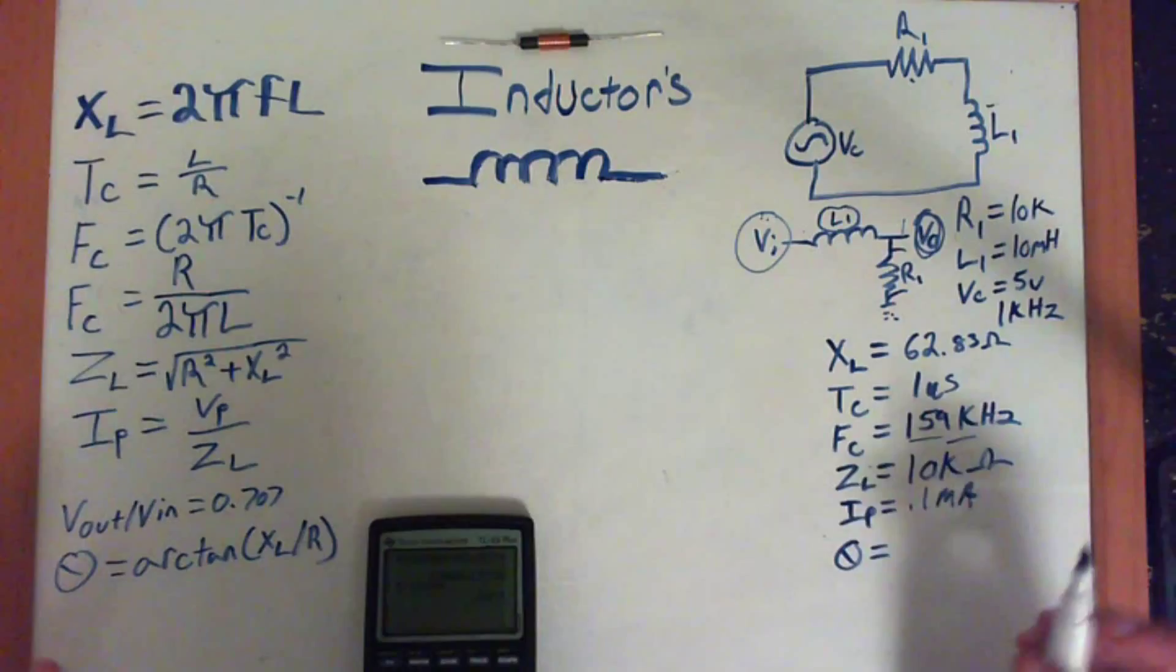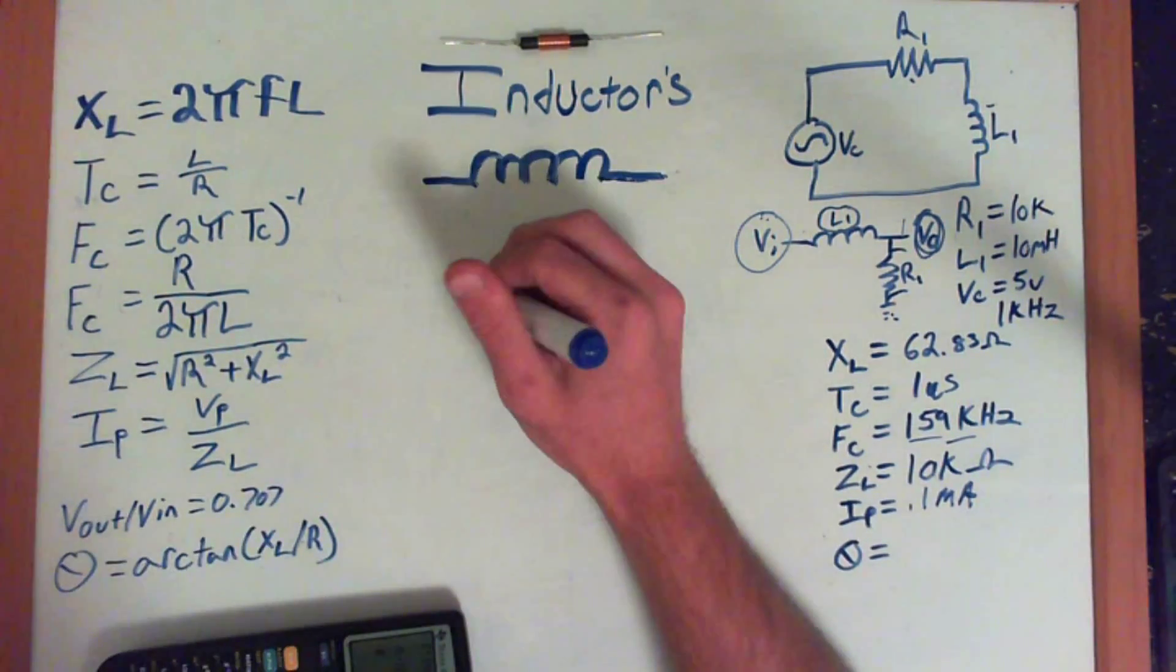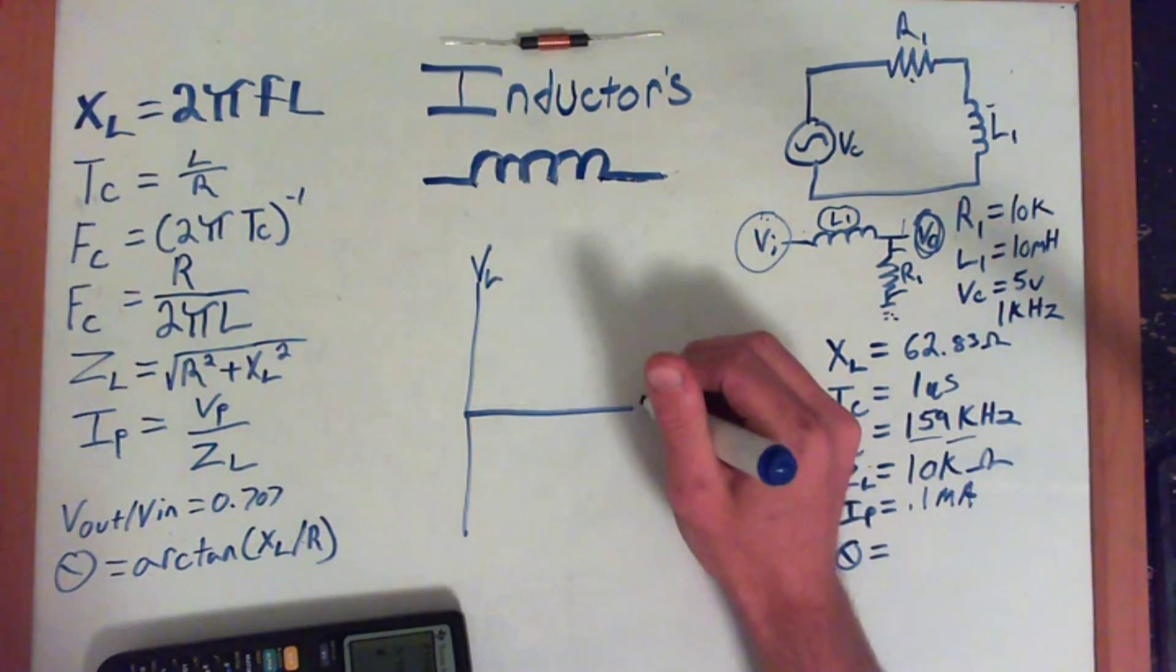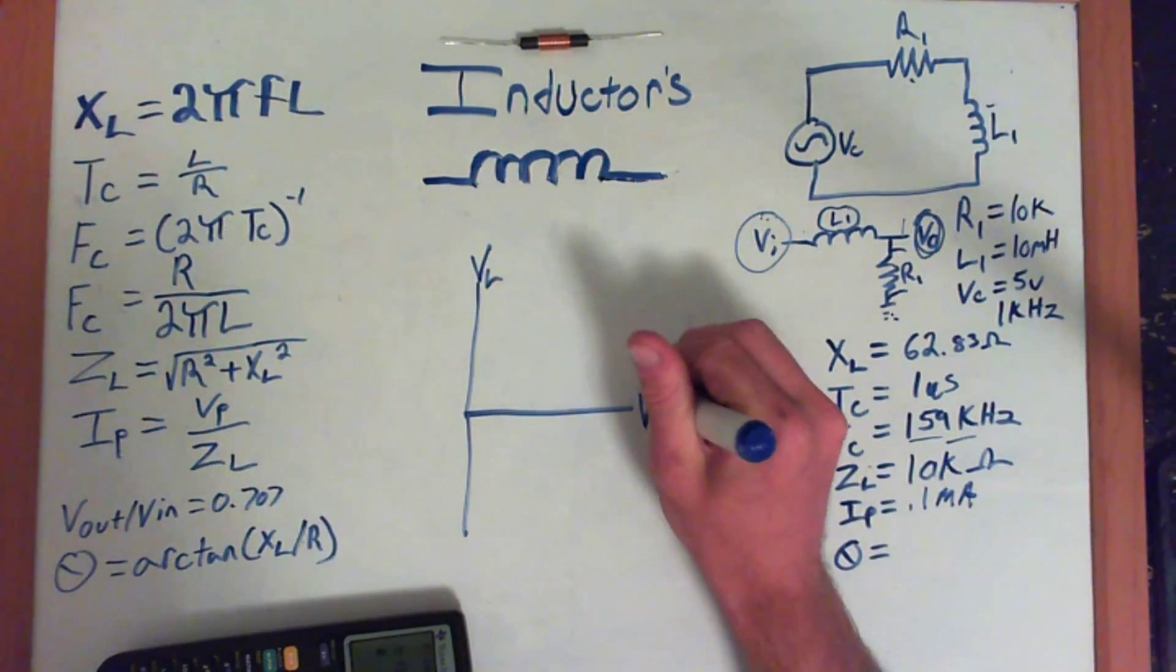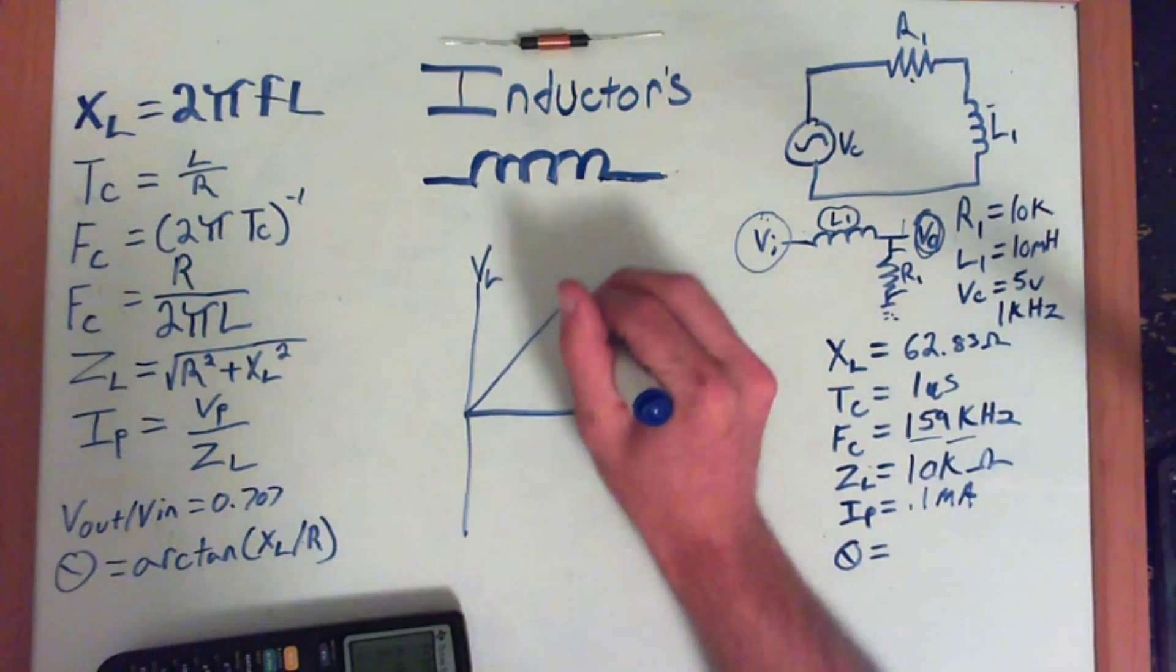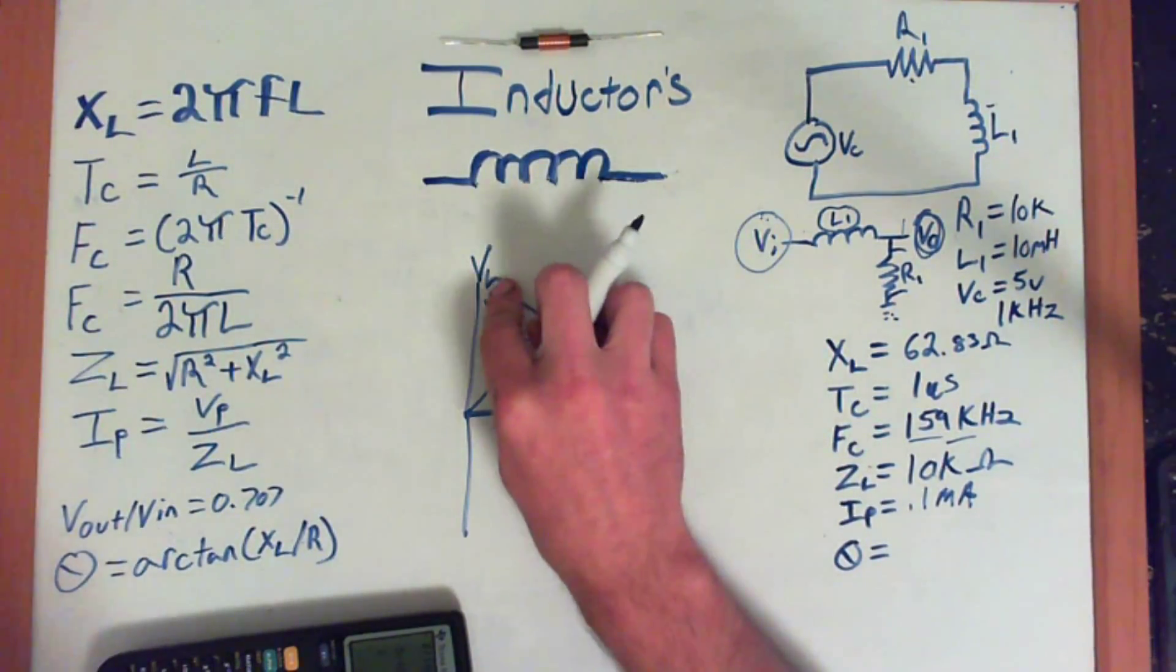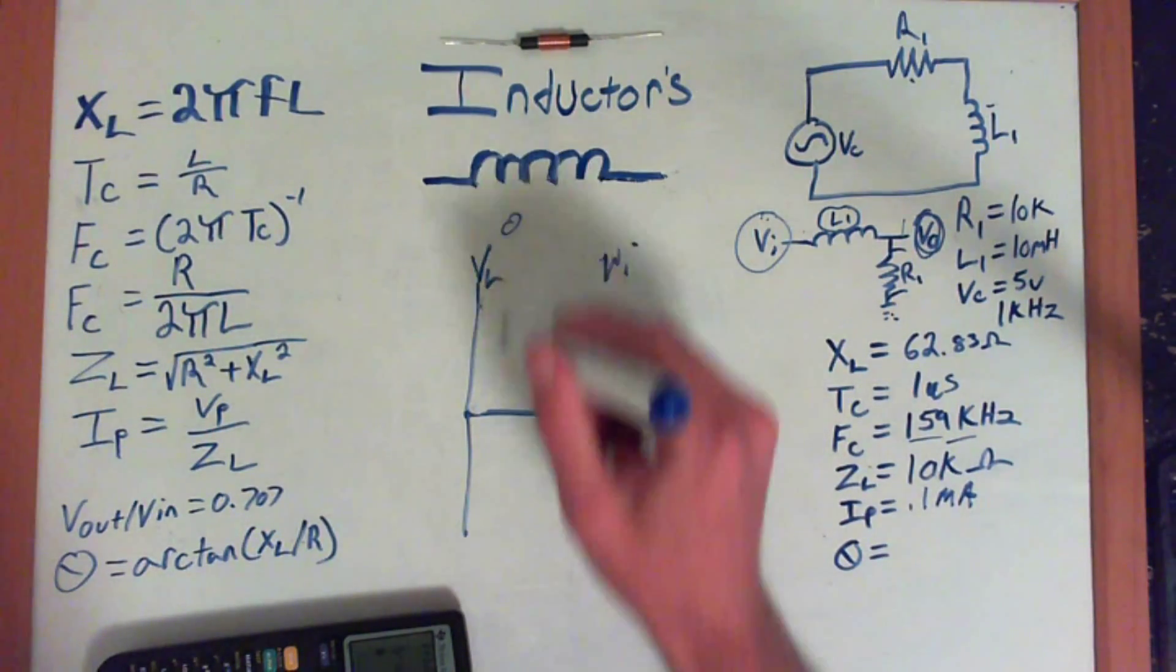Alright, so now that we've got all those, let's go ahead and jump over here and get our phase angle of the circuit. And by phase angle, let me draw this out here. This is our VL, this is our VR, which is our voltage across the resistor. And then we're looking for where our Vin is in between here and there. At what angle. This is going to be the Vin somewhere in there. Now it can be anywhere from 0 to 90 degrees.